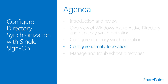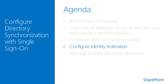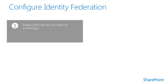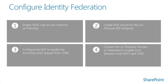Identity Federation enables resource access across completely unrelated security domains by sharing a limited amount of information such as security identities and policies. In federated environments, clients use a single set of credentials issued under one security domain to access resources on completely different security domains. Configuring Identity Federation with SharePoint 2013 and Office 365 includes enabling the ADFS role on at least one on-premises machine, creating a DNS record for the on-premises IDP endpoint, configuring the IDP to handle incoming token requests from Office 365, and converting the on-premises domain to federated to enable trust between ADFS and Office 365.